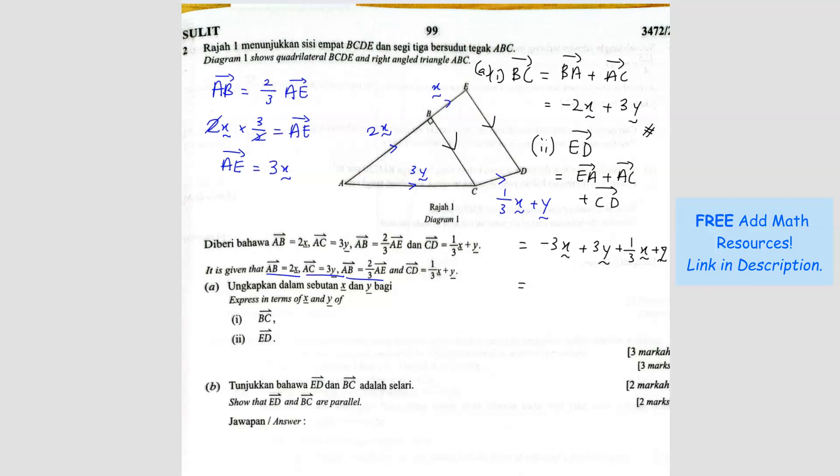So we simplify. Negative 3 plus 1 over 3 will give me negative 8 over 3. Is that correct? Yeah, correct. And then 3 plus 1 will be 4Y. So plus 4Y. So this is ED. Done.